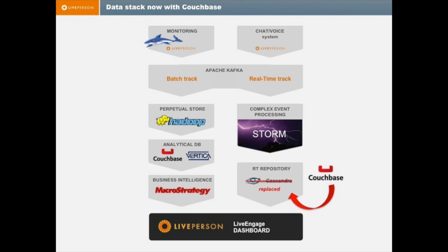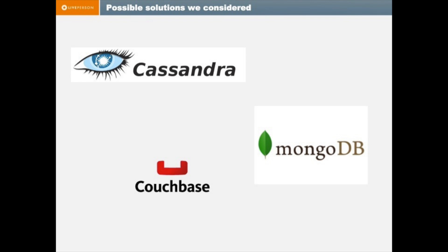We're using Storm in order to do complex event processing. We essentially had an evaluation of different NoSQL solutions and considered three main options: Cassandra was the first option that we looked at, we also looked at MongoDB, and of course Couchbase.